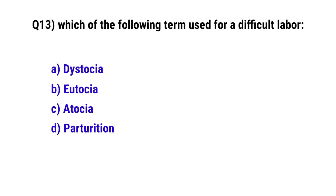Question number thirteen: Which of the following term is used for a difficult labor. The correct option is D, dystocia.